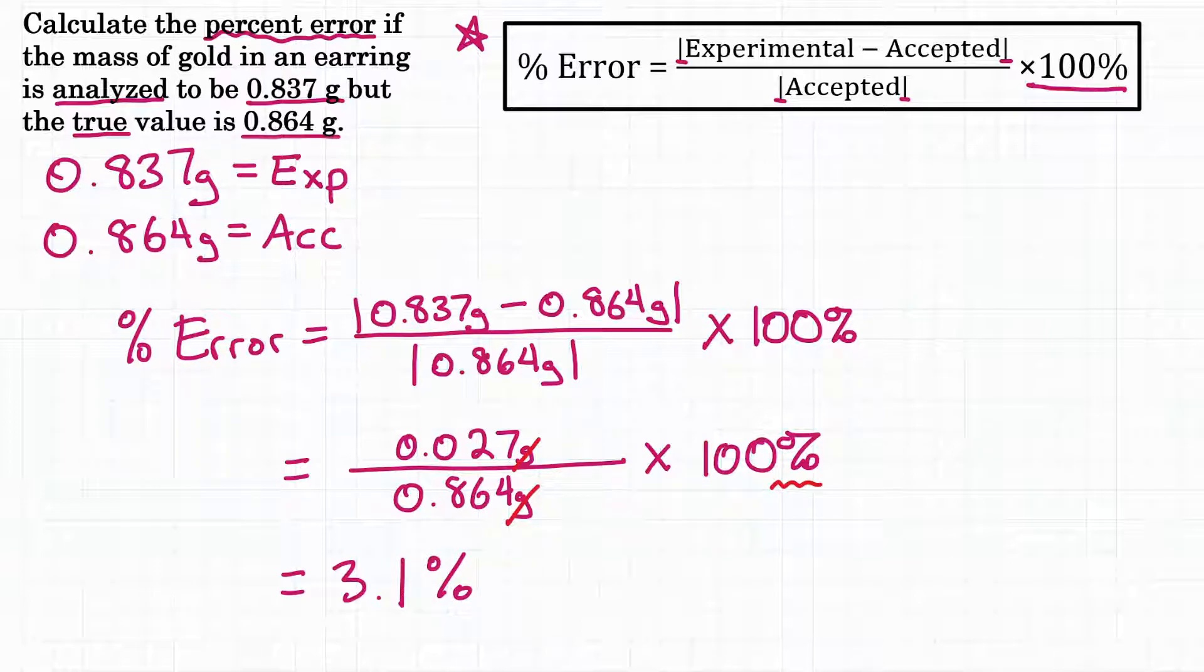There you have it. Calculate the percent error. If the mass of gold in an earring is analyzed to be 0.837 grams, but the true value is actually 0.864 grams, our percent error would be 3.1%.